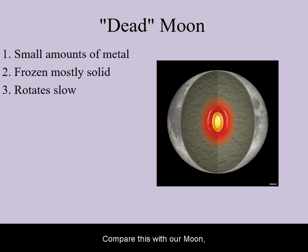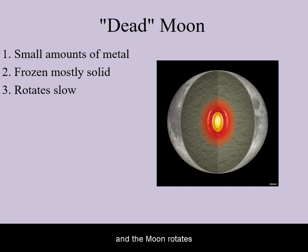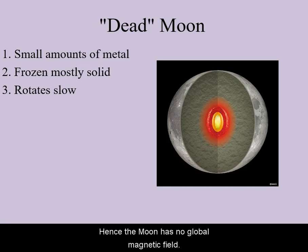Compare this with our Moon, which has a much smaller core that is frozen mostly solid, and the Moon rotates at a much slower pace. Hence, the Moon has no global magnetic field.